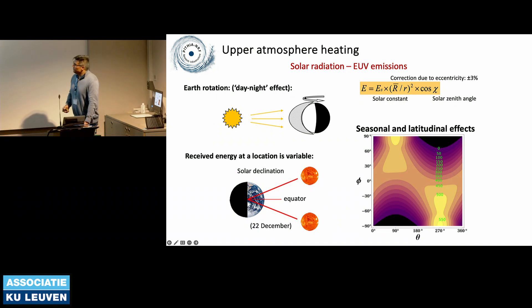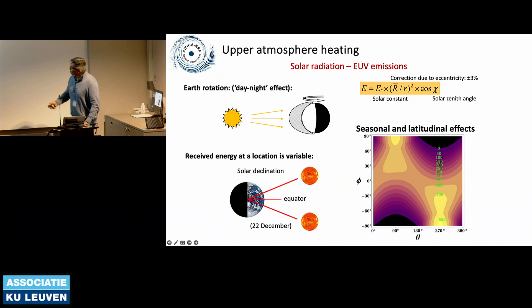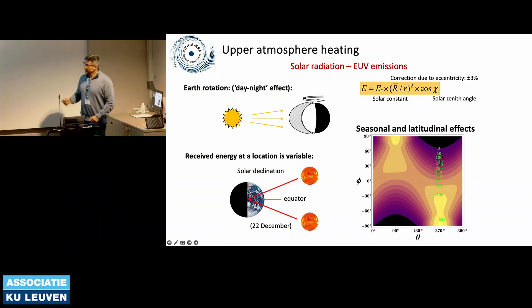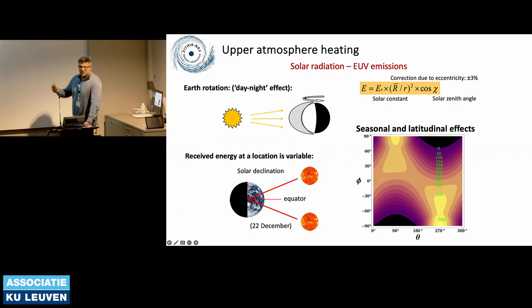What are the heating effects and what do they actually cause? The main heating is due to solar EUV emissions, anything between 20 and 100 nanometers. First of all, you have a day-night effect. Earth rotates, so there is always one illuminated side where you have ionization and photodissociation, and much less on the other side. This is also why we work with both longitude and solar local time.